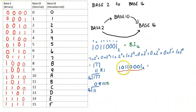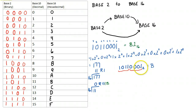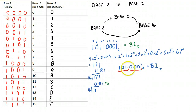So starting from the left here, 1, 0, 1, 1 — we see that is 11. So that means we put a B. Then 0, 0, 0, 1 is a 1, and then my conversion is done. And that's a shortcut for converting from base 2 to base 16, simply by taking the number and breaking it up into nibbles — four bits are called nibbles.